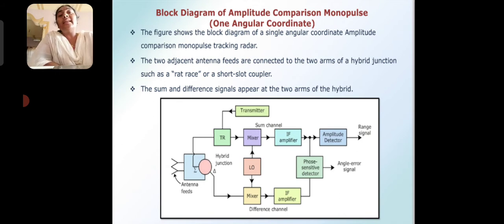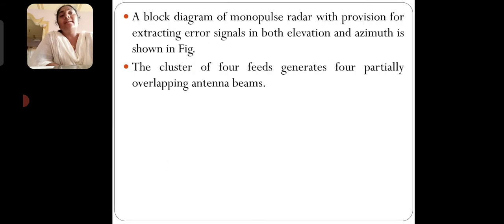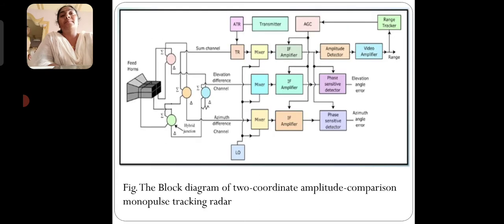The antenna feeds are given to the magic T. The magic T is a four-port network. From that four-port network we obtain the sum and difference signals. A block diagram of monopulse radar with portions for extracting the error signal in both elevation and azimuth is shown. The cluster of four feeds generates four partially overlapping antenna beams.